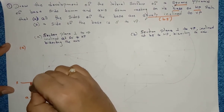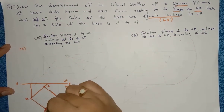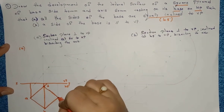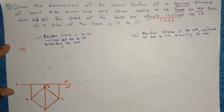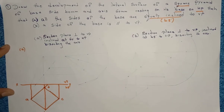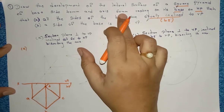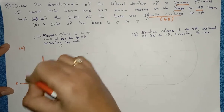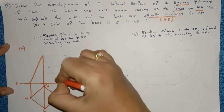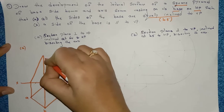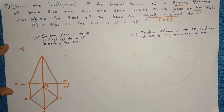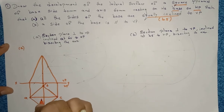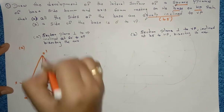From A, project the point till the reference line. From B and D, project the points till the reference line. From C, project the line till the reference line. The axis height is 60 mm — draw the axis height of 60 mm. For pyramids, you must mark the midpoint; mark it and name it as O and O dash.